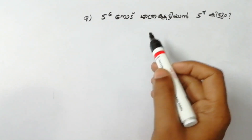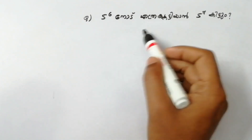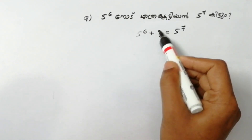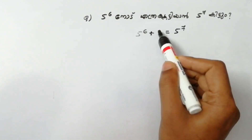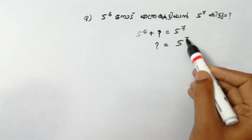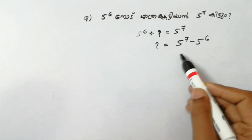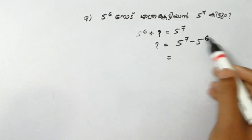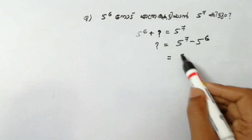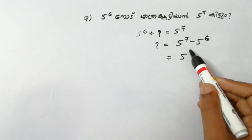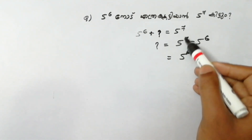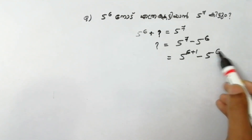Let's try it. How many 5 raised to 6? How many 5 raised to 7? You can find 5 raised to 7. If I find this question mark for the answer — 5 raised to 7 minus 5 raised to 6 — the answer is 1, power 1. 5 raised to 7, I will add 6 plus 1. Minus 5 raised to 6.